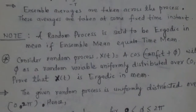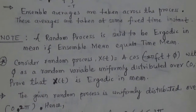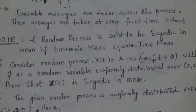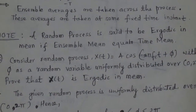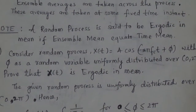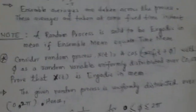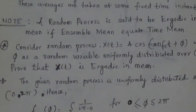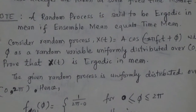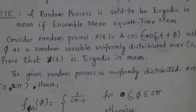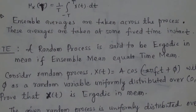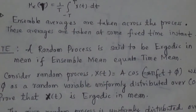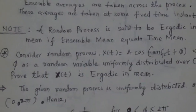In this given example, you have to prove that x(t) is ergodic in mean — meaning you have to prove that ensemble mean equals time mean. So we will first calculate the ensemble mean, then we will calculate the time mean and show both are equal. Then we can say the given process x(t) is ergodic in mean.